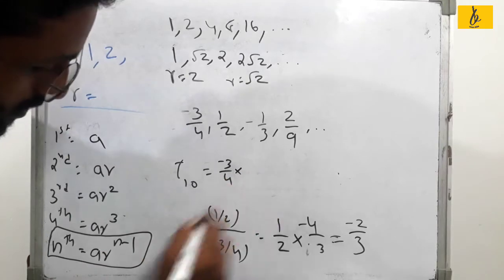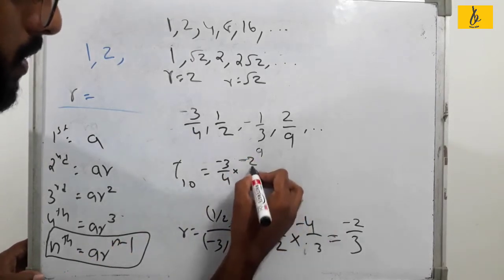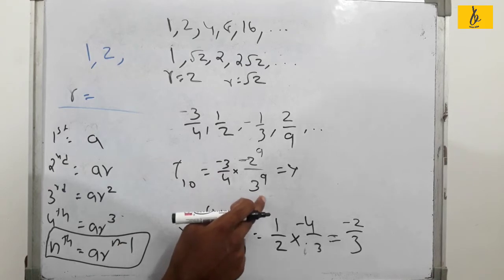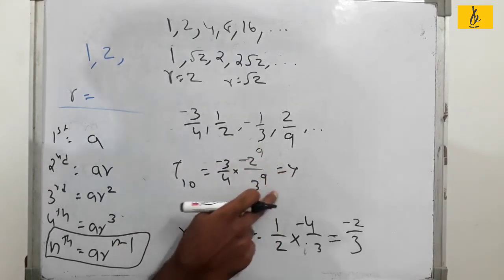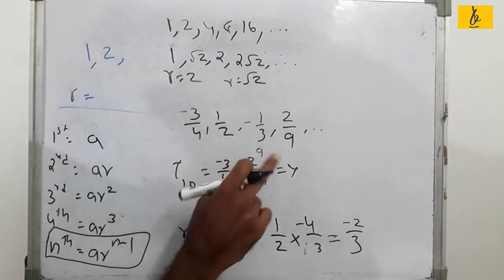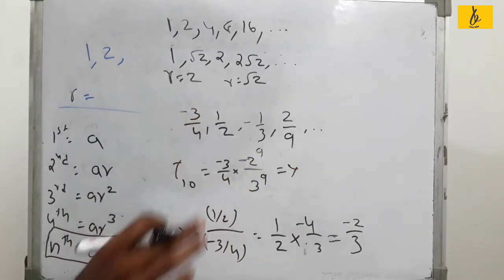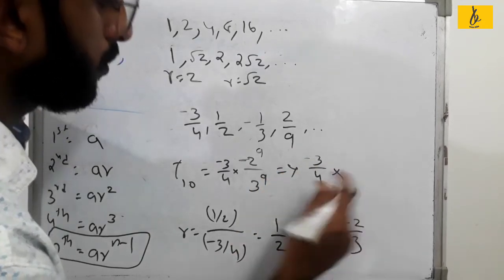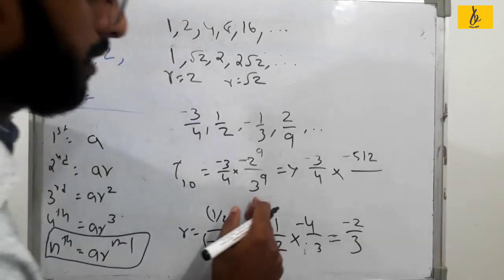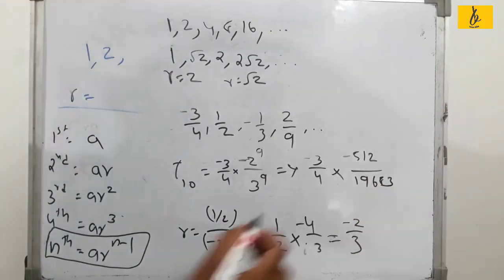Now, the 10th term equals a into r to the power n minus 1. So it is (−3/4) into (−2/3) to the power 9. This equals (−3/4) into (−2 to the power 9) divided by (3 to the power 9). We will multiply this out directly.